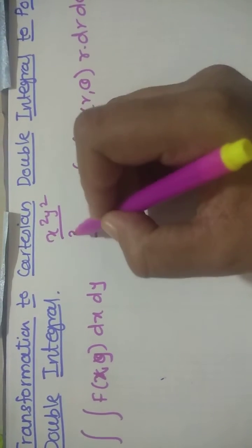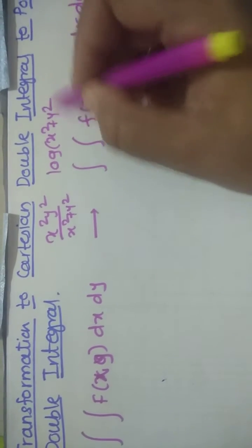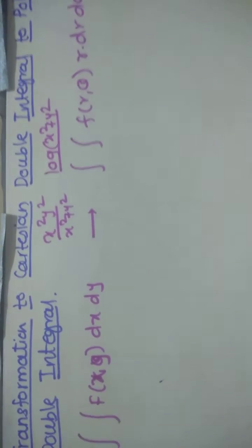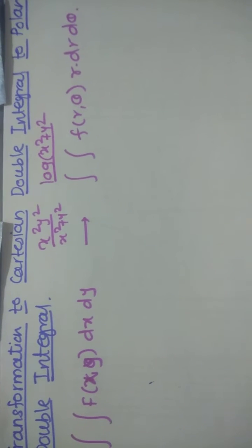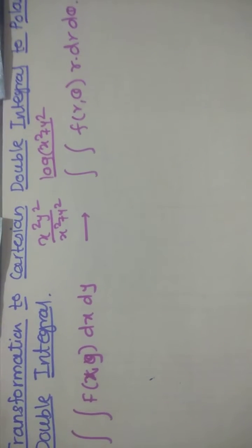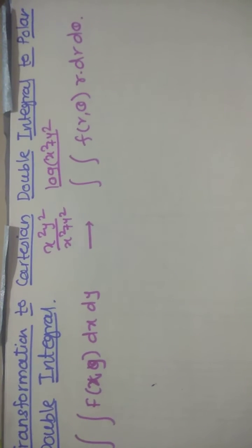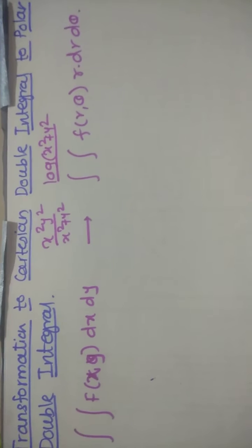Then log of suppose x squared plus y squared upon any term in x squared y squared. In this example, it is difficult to find out the integration by taking Cartesian coordinate system. So in that case, you can convert the Cartesian double integral to polar double integral.